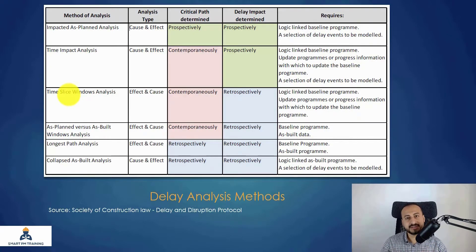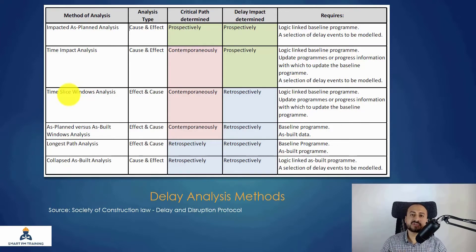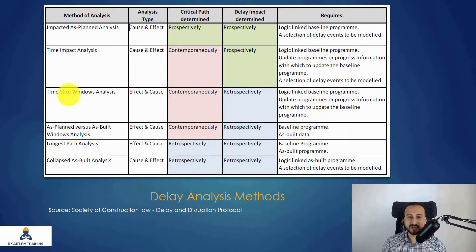IT and construction models are very different. IT is more agile — it adapts to changes quickly and more easily than construction. In construction, a contractor may have three floors of concrete already done, and if the client wants to change them, it's too late. The cost of a change is very, very high, so the model is not agile in construction.